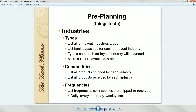Make a list of all the products shipped and received by each industry, and think about frequency — how often do commodities get shipped or received? Do trains drop cars off daily, every other day, weekly? On a lot of layouts here in Colorado, there are cars that don't move for two sessions before they move — the owner designed it that way. Not every car moves every operating session.